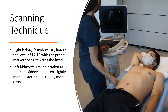When scanning the right kidney, the probe should be placed in the mid-axillary line at the level of T4 through T6, with the probe marker initially facing towards the patient's head. After the kidney is identified, the transducer should then be rotated slightly until the ultrasound beam is positioned in between the ribs to avoid any acoustic shadowing from the ribs.